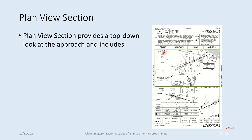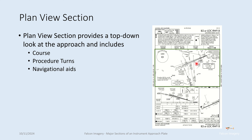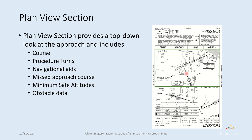In the plan view section, this is the main body and it's basically a top-down look at the approach and course. It includes not only the inbound course information, but also procedural turns, navigation aids, fixes, initial approach fixes, and final approach fixes. It also shows the minimum safe altitude — in case you lose navigation equipment or get confused — relative to a fix, as well as obstacle data with numbers indicating obstacles and their particular elevations.